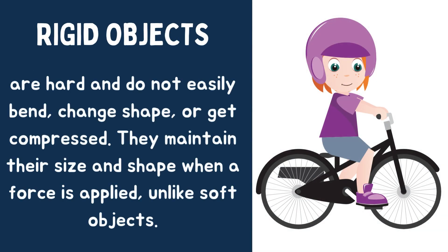Rigid objects are hard and do not easily bend, change shape, or get compressed. They maintain their size and shape when a force is applied, unlike soft objects.